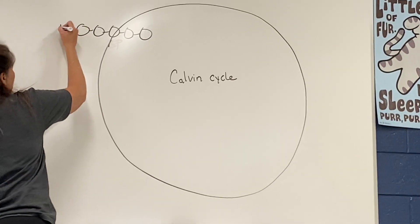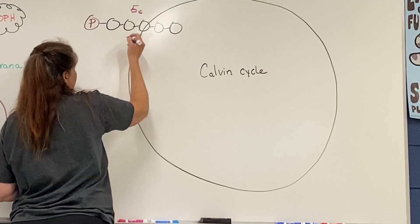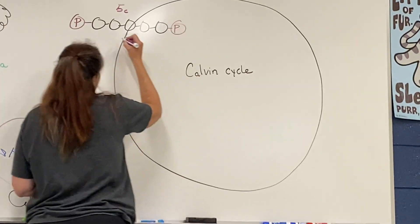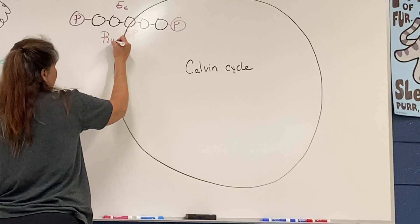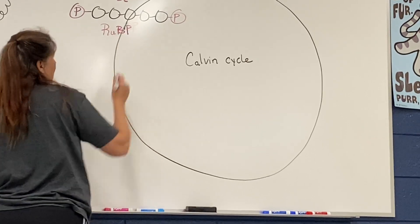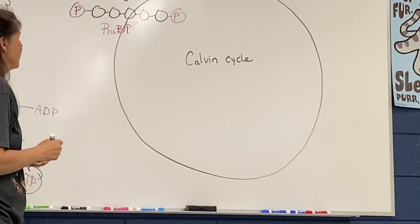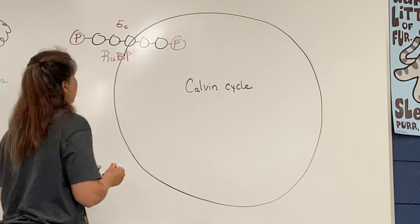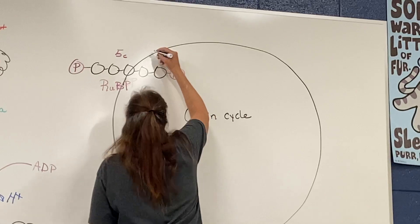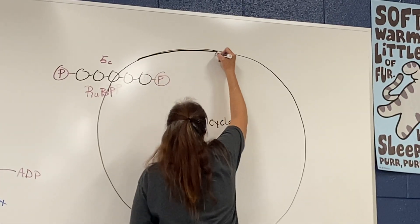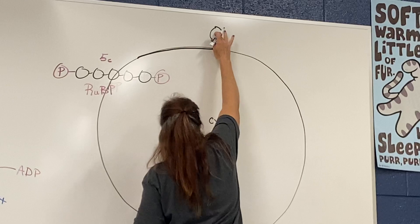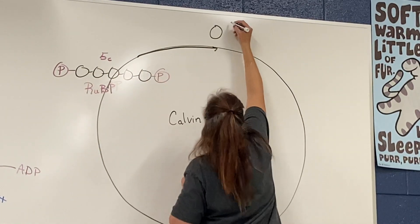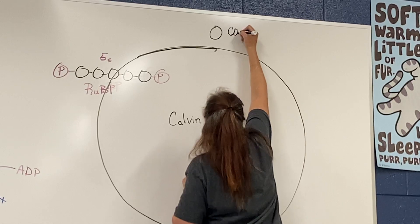We're going to start with a 5-carbon sugar, and the name of that 5-carbon sugar is ribulose biphosphate — we abbreviate that RuBP, and your book will probably use that abbreviation as well. We rarely see it written out in the full name. So RuBP is our starting point, and then we're going to bring carbon dioxide in — those circles represent carbon atoms.